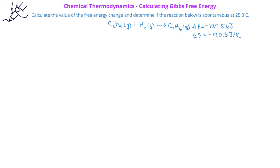This particular reaction involves C2H4 gas reacting with hydrogen gas to produce C2H6 gas. We're given that the enthalpy change for this reaction is negative 137.5 kilojoules, and the entropy change for the reaction is negative 120.5 joules per Kelvin.